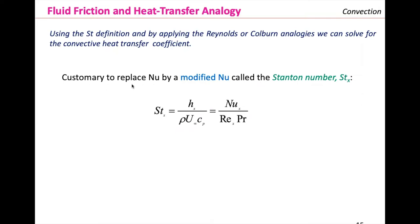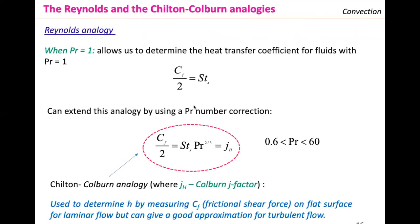Applying the Stanton definition to the Reynolds-Colburn analogy to solve for the heat transfer coefficient: we replace the Nusselt by a modified number called the Stanton. The Stanton equals the convective heat transfer coefficient over density times free stream velocity times heat capacity, which equals the Nusselt divided by the Reynolds times the Prandtl. From this equation we can derive the two analogies — the Reynolds analogy and the Chilton-Colburn analogy — to solve for the convective heat transfer coefficient once we know the shear forces.